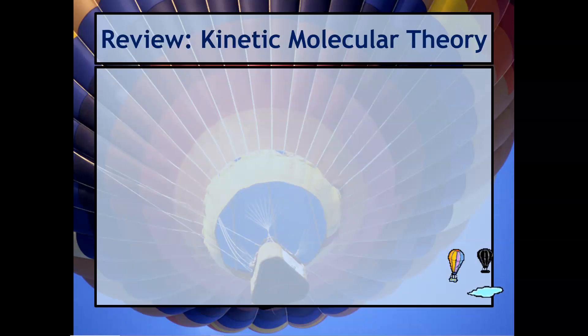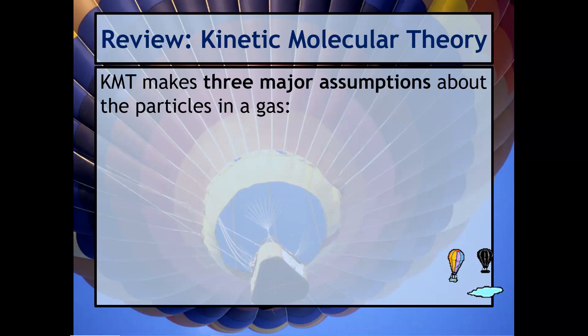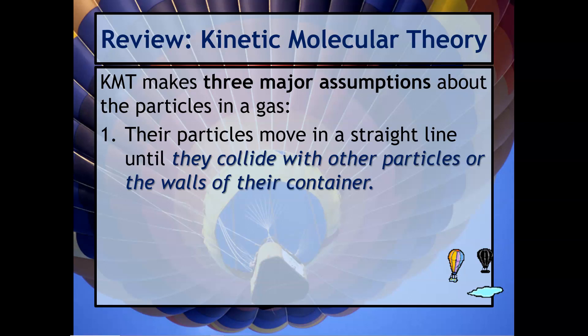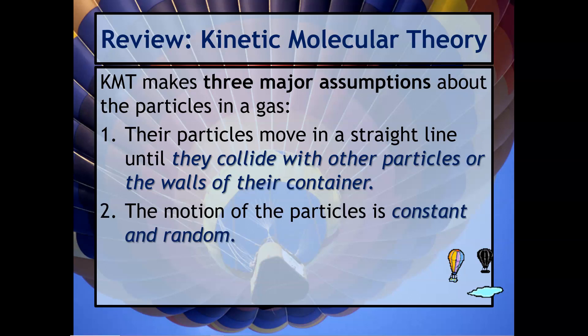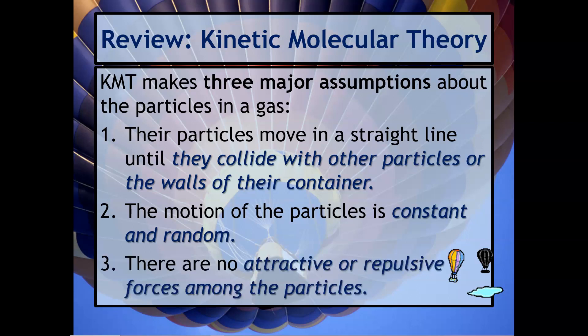To quickly review, kinetic molecular theory makes three major assumptions about the particles in a gas. The first is that particles will move in a straight line until they collide with other particles or the walls of their container — similar to a random walk. The second assumption is that the motion of the particles is constant and random. And finally, we assume that there are no attractive or repulsive forces among the particles in a gas.